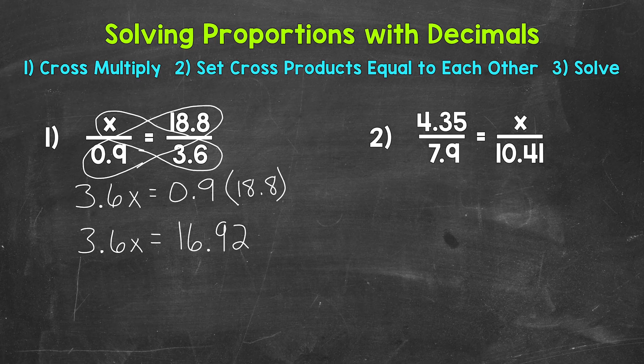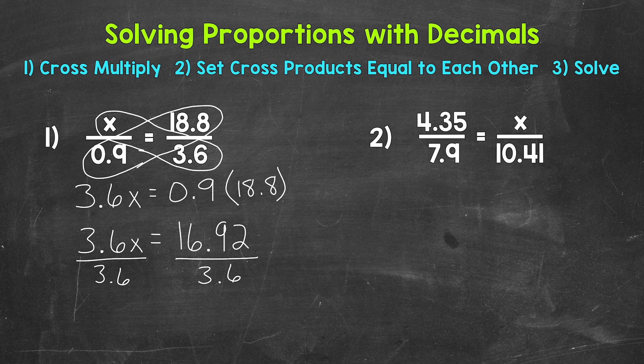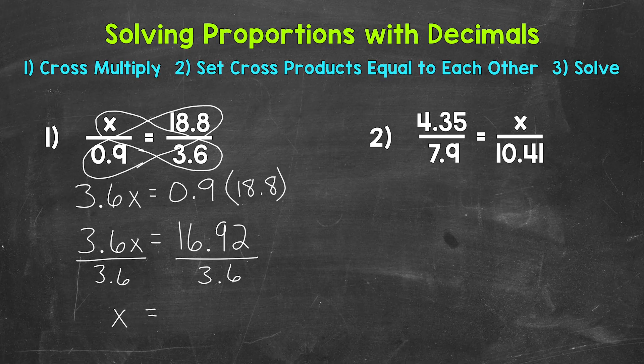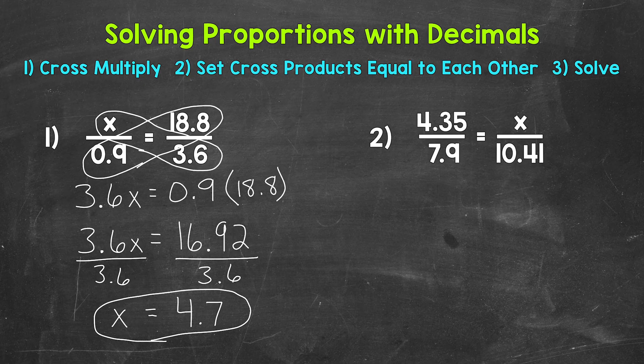Now we have a one-step equation that we can solve for x. We need to isolate that variable of x. We can do that by dividing both sides by 3 and 6 tenths. 3 and 6 tenths x divided by 3 and 6 tenths gives us x. And then 16 and 92 hundredths divided by 3 and 6 tenths gives us 4 and 7 tenths. So x equals 4 and 7 tenths.